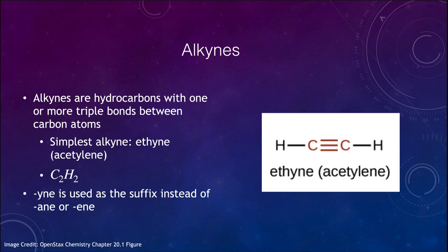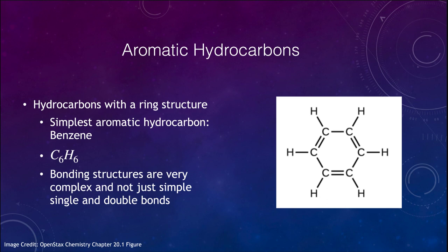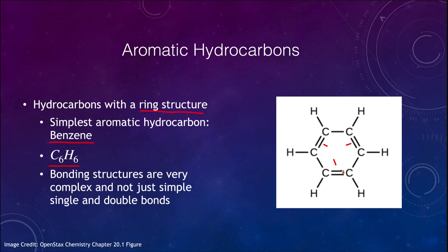The last type we want to look at is aromatic hydrocarbons — hydrocarbons with a ring structure, where carbon bonds come around and bond back to carbon, forming a ring rather than a chain. The simplest one is benzene, C6H6, with six carbon atoms. Note that benzene has several double bonds and several single bonds alternating around the ring; if all were double bonds, there would be no hydrogen. These single bonds allow each carbon atom to have at least one hydrogen associated with it, creating a complex ring bonding structure.